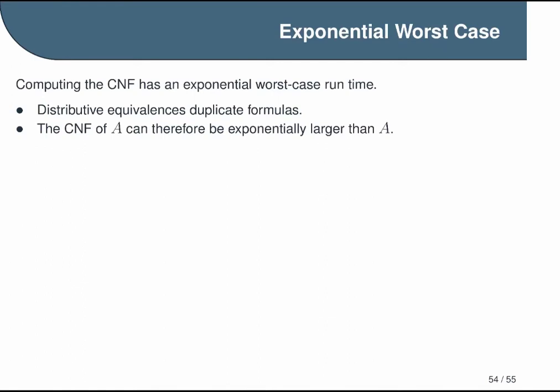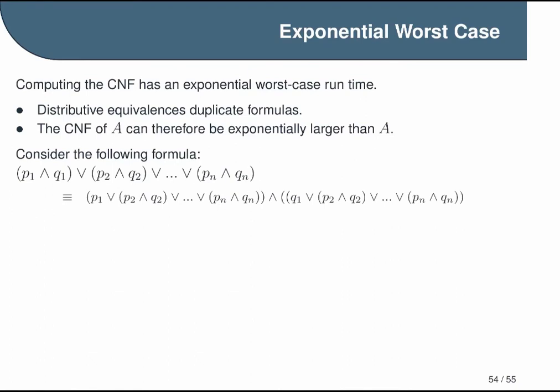So here is an example. Consider the formula (p1 ∧ q1) ∨ (p2 ∧ q2) ∨ etc., up to (pn ∧ qn). In other words, this is a big disjunction of n different conjunctions, each of which has two variables. When we go to apply the distributive law to this, we end up copying the whole right side of the formula in the first step. Remember, this is our A and B, and this whole thing is our C. Actually, it's not just the first step; something similar happens at every step. So what we end up with is this giant formula in which every clause has one literal from each of our original n clauses.